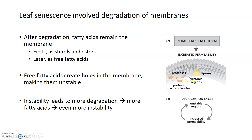Once the lipases start to degrade phospholipids, the fatty acids that are part of those phospholipids remain in the membrane. In the beginning of senescence, these fatty acids are actually converted into sterols and waxy esters, which are less harmful to the membrane overall. But later, as leaf senescence progresses, the unstable regions and the lipases that continue to degrade phospholipids release even more free fatty acids, which are no longer converted into these safer sterols and esters.